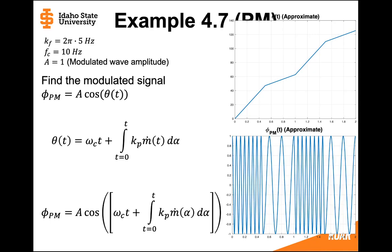From time 0 to 0.5, the slope of the angle is steeper, giving the higher frequency. At time 0.5, the slope becomes much less steep — that's 5 Hz. From 0.5 to 1, the phase modulated signal is more spread out because the frequency is lower at 5 Hz. Where the frequency is higher, from 0 to 0.5, the signal is bunched up; from 0.5 to 1, the frequency is lower and the graph is more spread out.